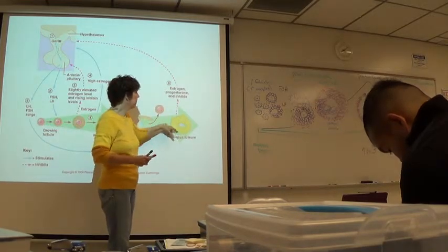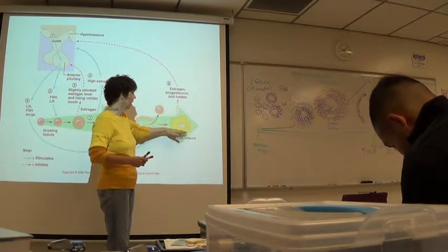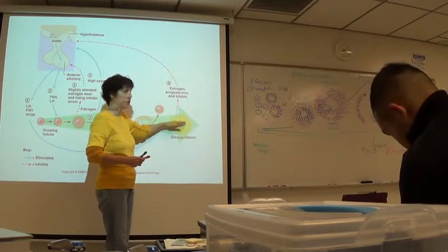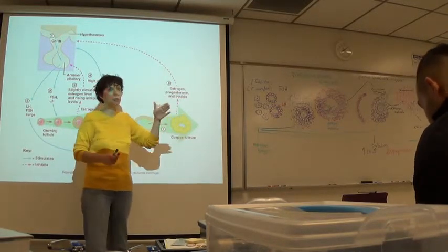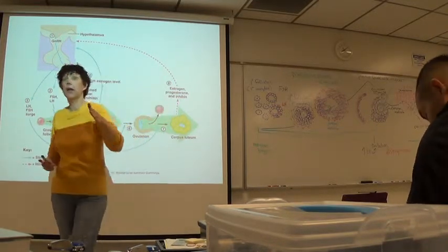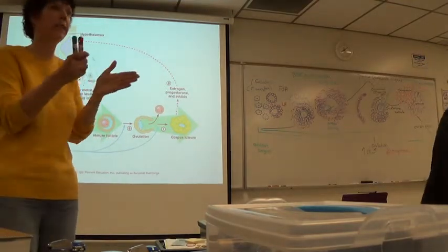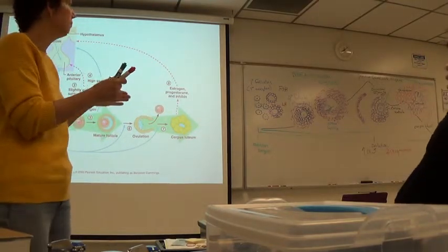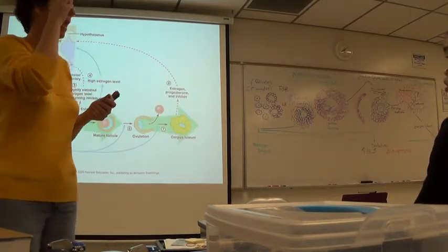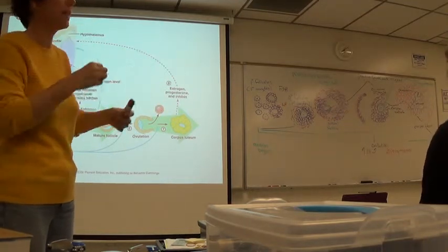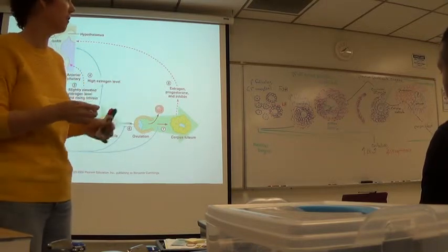The corpus luteum now makes primarily progesterone and some estrogen, and that's going to continue unless it falls off. That only lasts for about nine days or so, and then it starts to fall. The last week it's falling, and then menses starts.